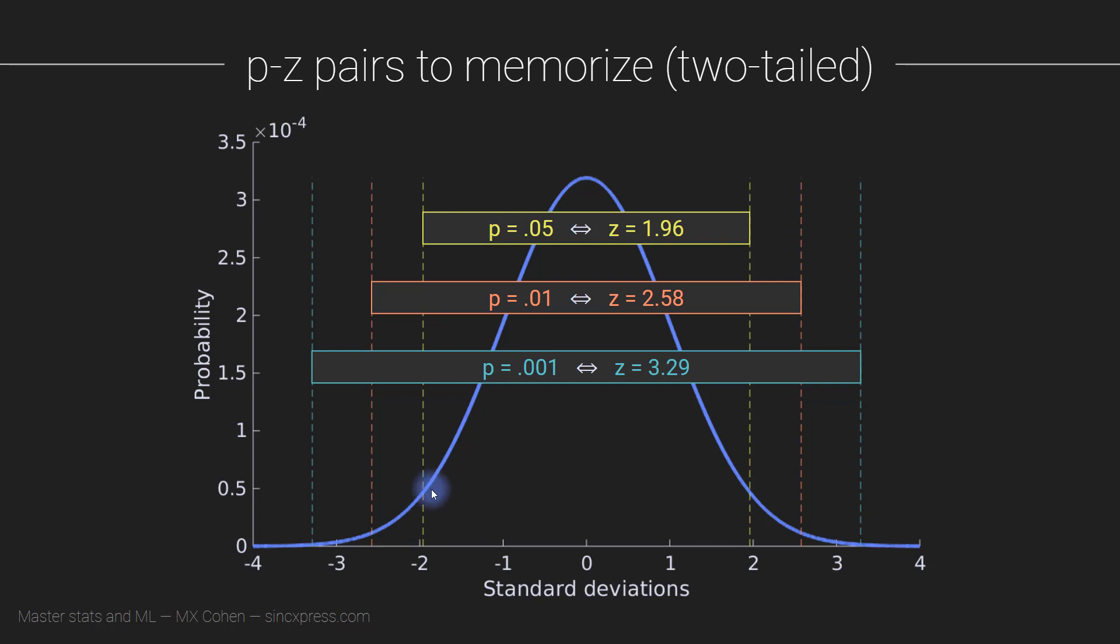A p-value of 0.01 corresponds to a z-value of 2.58, and a p-value of 0.001 corresponds to a z-value of 3.29, so almost 3.3. And again to repeat the interpretation, what this means is that if you say that I'm going to use a p-value threshold of 0.001 as a significance threshold, then the effect that you observe in your sample data, in your experimental data, that effect must be more than 3.29 standard deviations away from the mean of the null hypothesis distribution in order to consider that effect to be statistically significant.